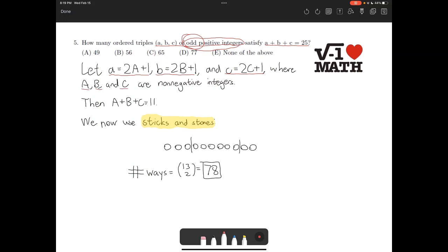Then we quickly see that 2A plus 2B plus 2C equals 25 minus 3, which is equal to 22. So A plus B plus C is equal to 11.